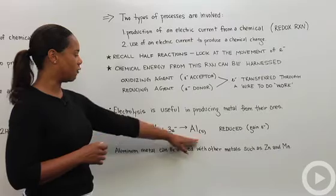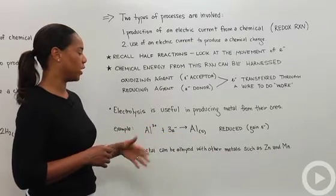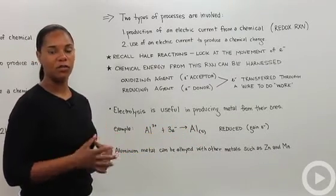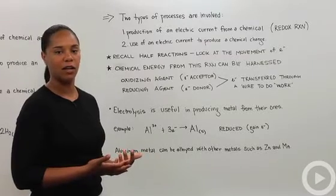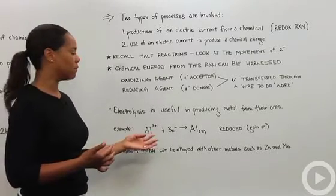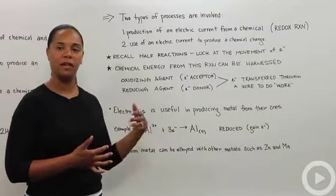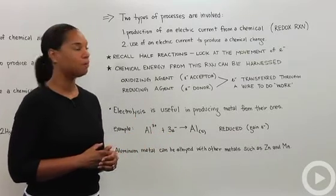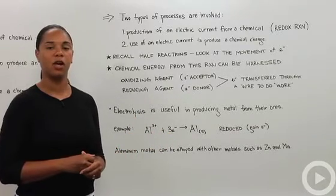After you get this aluminum metal, you can alloy that with other metals depending on what you're planning on using the aluminum for. Some possibilities are zinc and manganese - those are the most common. And that is the basics of electrolysis.